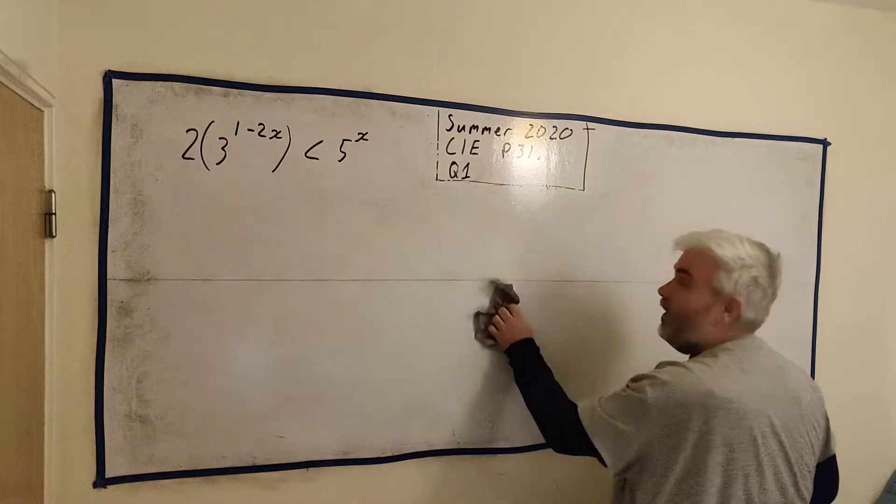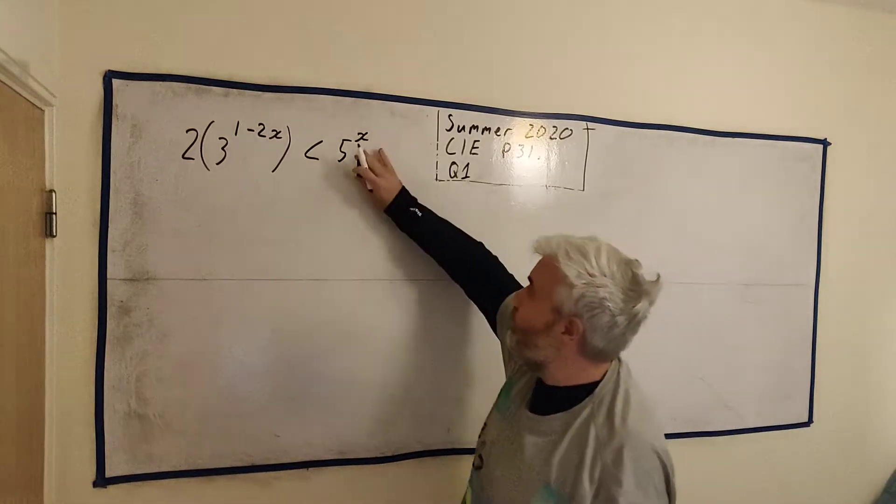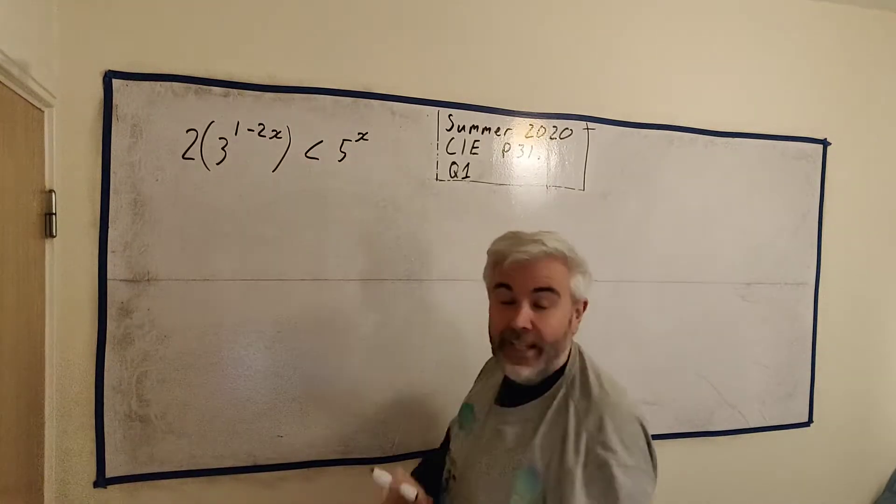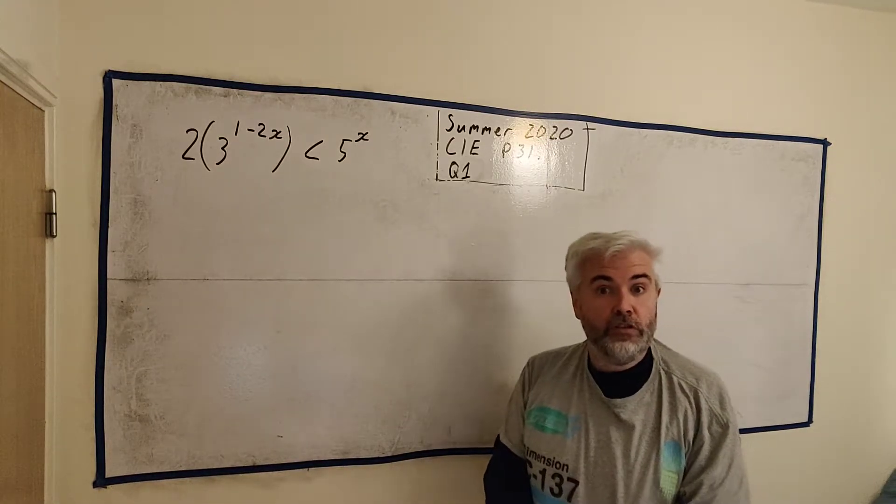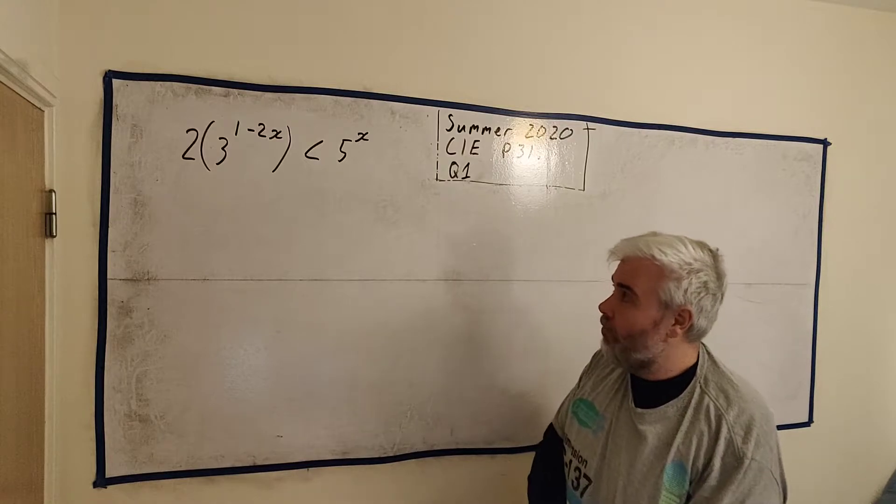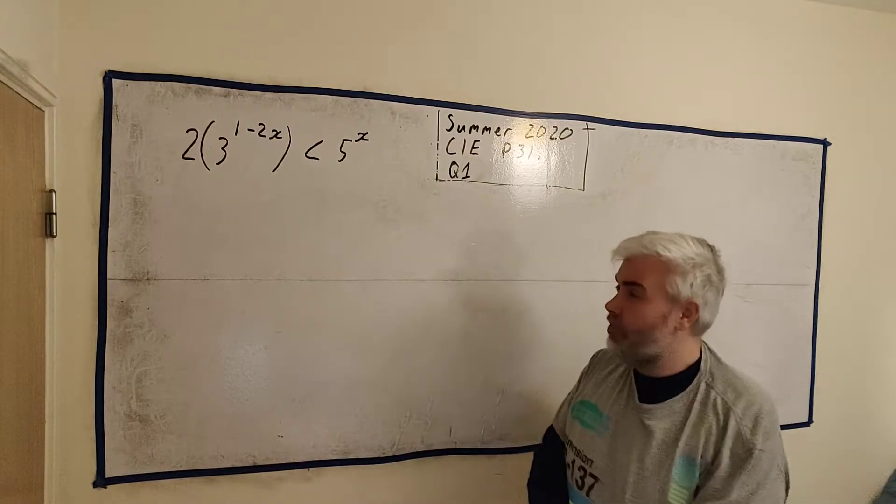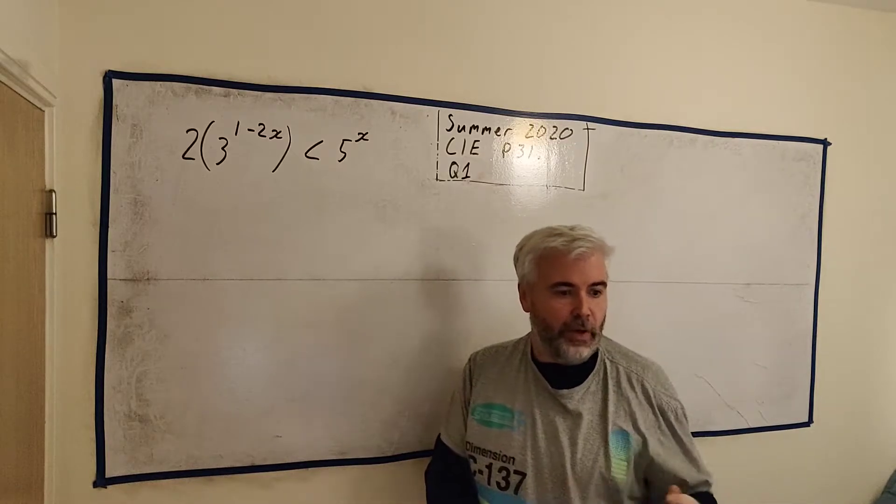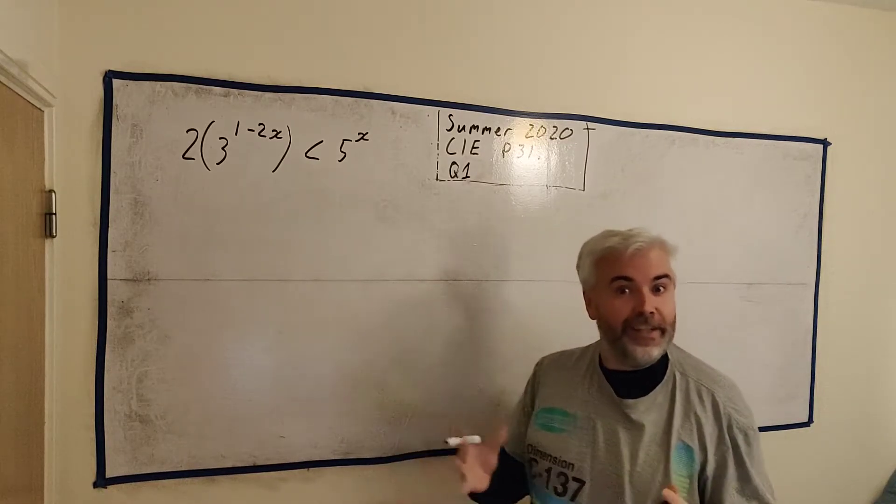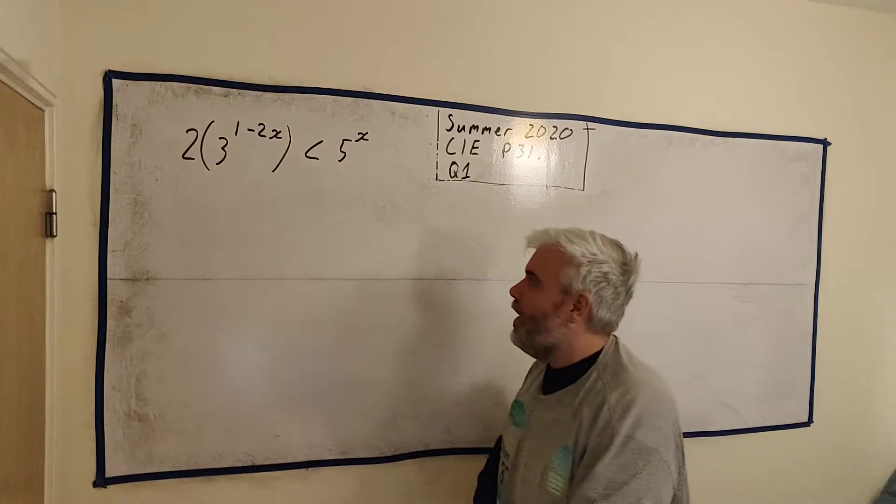So we just play around with this until x is on its own. There's two x's up here and up here. They're in the powers, they're in the indices, which is our clue to use logarithmics. You can use any logarithmic you want, but I'll go ahead and use the natural log. They're all very equivalent. We have rules for them and one of the rules is a way to change between them.